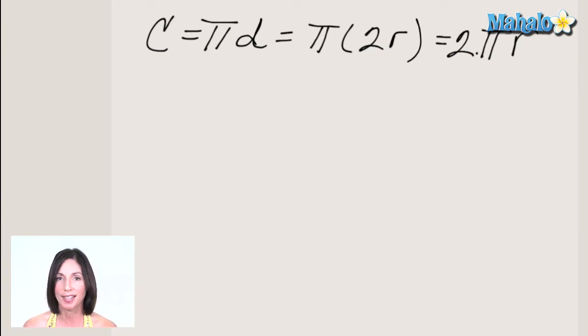Now let's talk just for a second about pi, that mysterious constant that you always see when you work with circles. Archimedes was the first person to accurately, very accurately, approximate the value of pi.